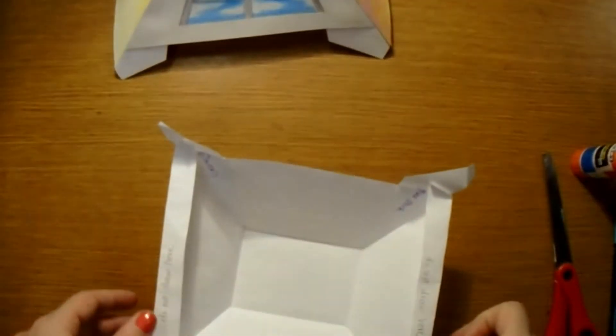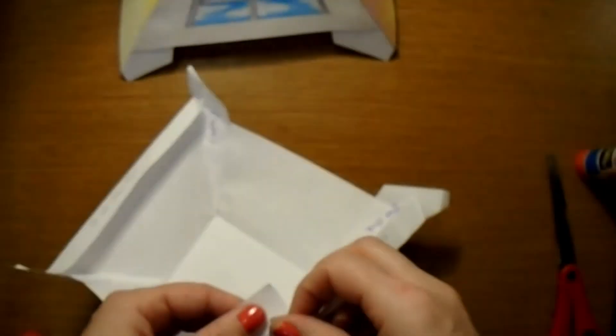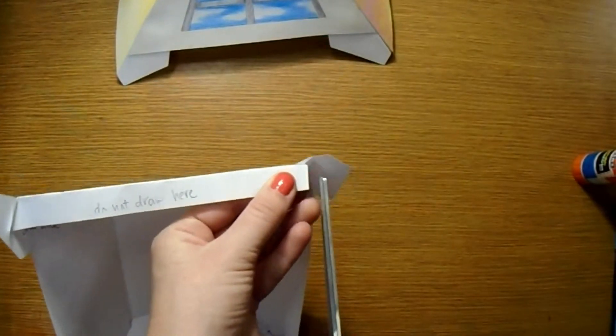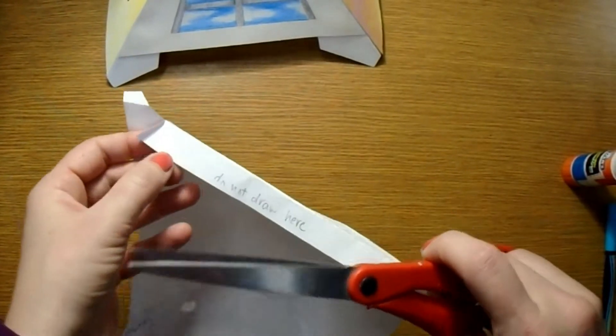But now when you look at it from the inside, you're going to have pieces that overlap in the corner. So what I'm going to do is cut away those little extra pieces.